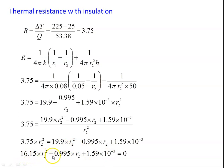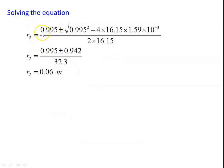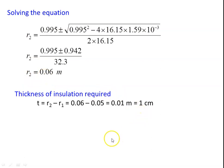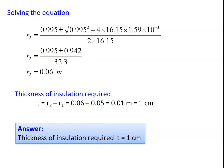The quadratic equation is: 16.15r₂² − 0.995r₂ + 1.59×10⁻³ = 0. Solving using the quadratic formula: r₂ = [0.995 ± √(0.995² − 4×16.15×1.59×10⁻³)] / (2×16.15) = [0.995 ± 0.942] / 32.3. This gives r₂ = 0.06 m. Therefore, the thickness of insulation required: t = r₂ − r₁ = 0.06 − 0.05 = 0.01 m = 1 cm.